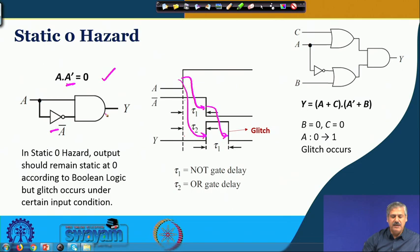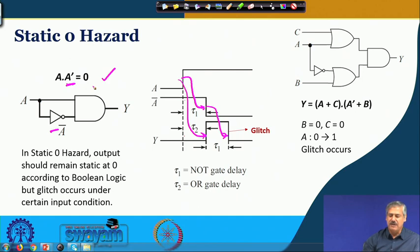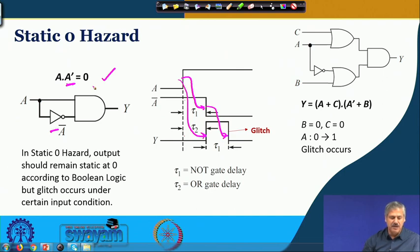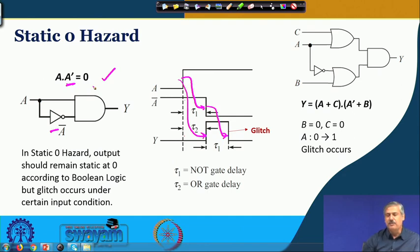For this AND relation, you should always get a 0, which is not happening because of the finite propagation delay. In Static-0 Hazard, the output should always remain static at 0 according to Boolean logic, but a glitch occurs because of certain input conditions.